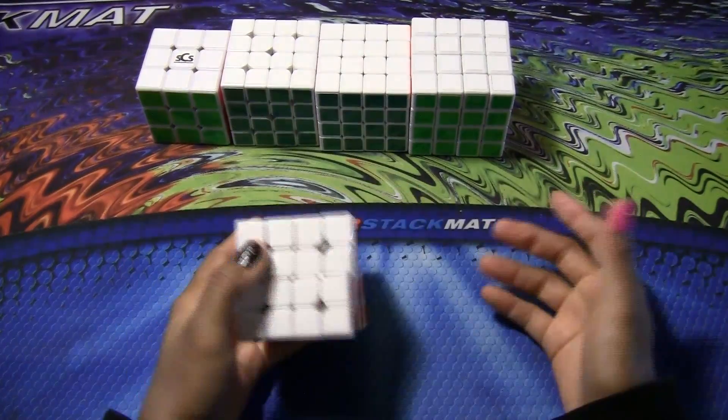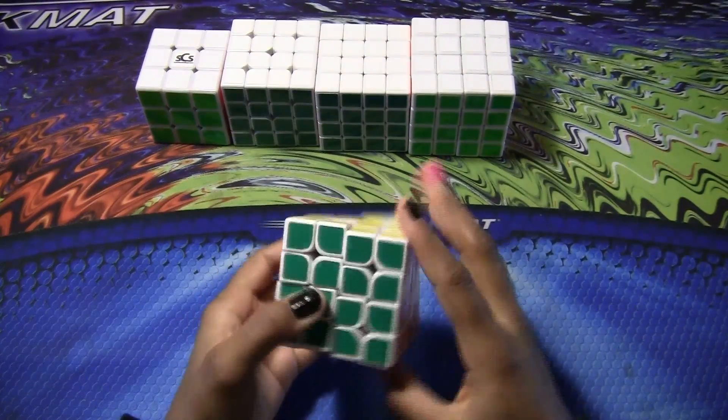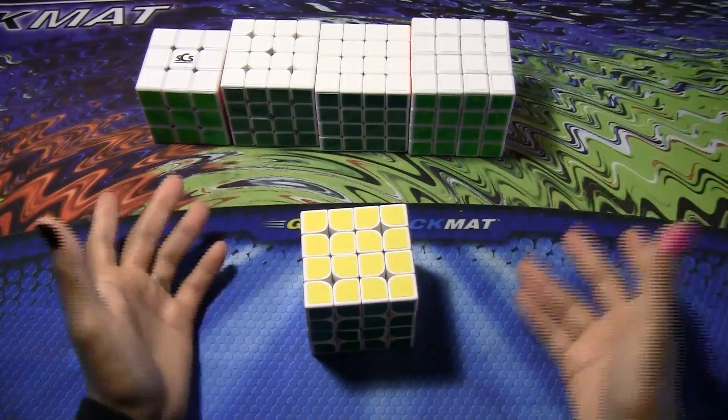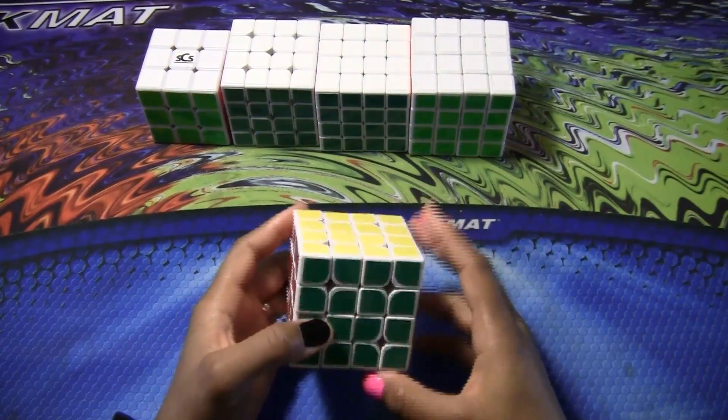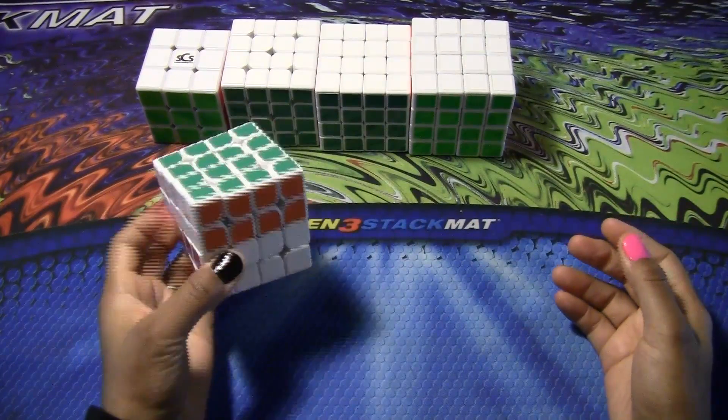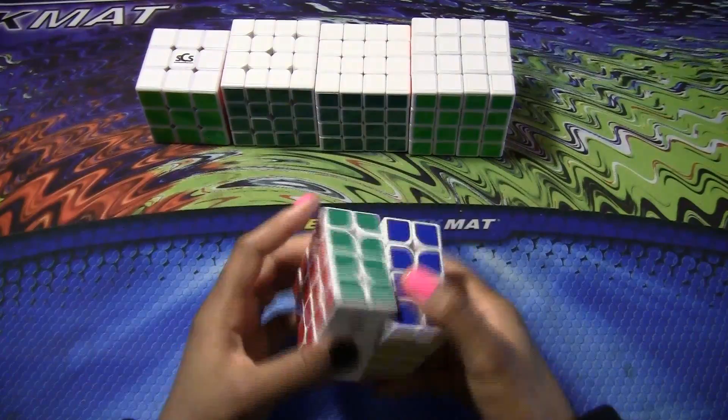Out of the box, I noticed that it was really gummy and also the outer layers are really loose, but I basically fixed that by tightening the puzzle. With the gumminess, I just broke it in. It takes about 15 solves or so to break in the lube so it can be just real nice.